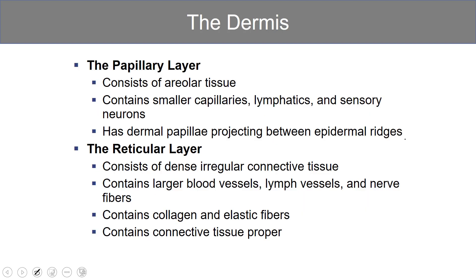The papillary layer is largely areolar tissue. It contains capillaries, lymphatics, and neurons. The epidermal papillae project between the epidermal ridges. The reticular layer is a dense, irregular connective tissue, and it contains larger blood vessels, lymphatic vessels, and nerves. This is where a lot of our collagen and elastic fibers are found.